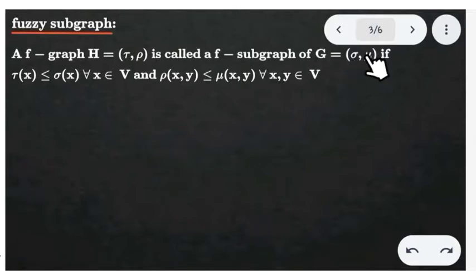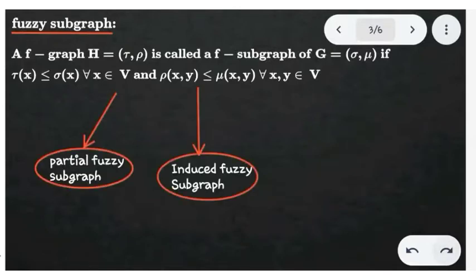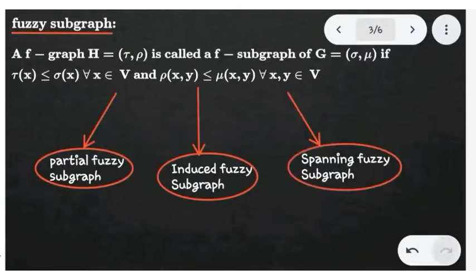And the edge fuzzy set mu of the graph G, which means tau of x is less than or equal to sigma of x, and rho of (x, y) is less than or equal to mu of (x, y). The fuzzy subgraph contains the following three types: partial fuzzy subgraph, induced fuzzy subgraph, and spanning fuzzy subgraph.